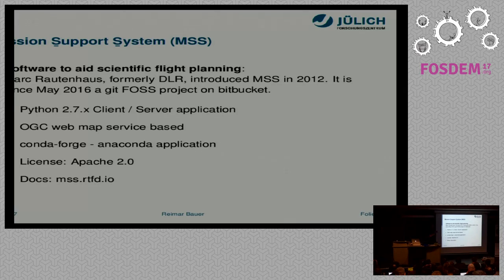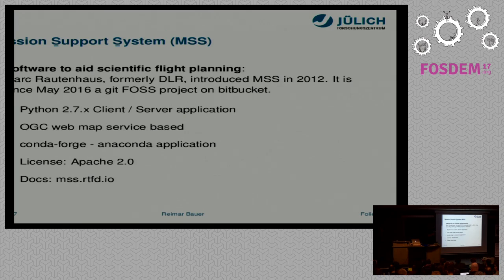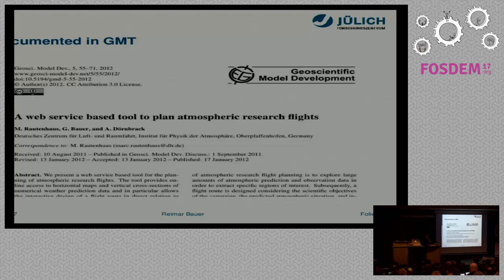This is the Mission Support Software. A group started developing it around 2010 to solve the issue of many groups planning together where the aircraft should go. Mark Rautenhaus from the DLR had the best idea, basing the software on the OGC Web Map Service. In May 2016 the project became open source, making it possible for several groups to join, use, and extend the software. One of the first things we did was put it on Conda Forge. The license is Apache 2, and we also use Read the Docs. Mark also published a paper about it so it's known in the scientific community.